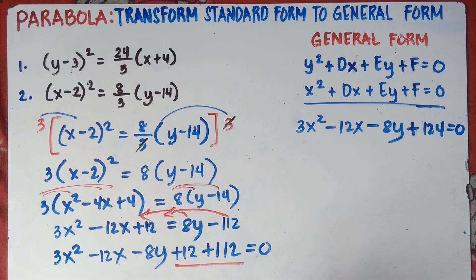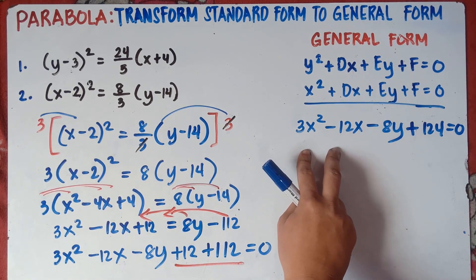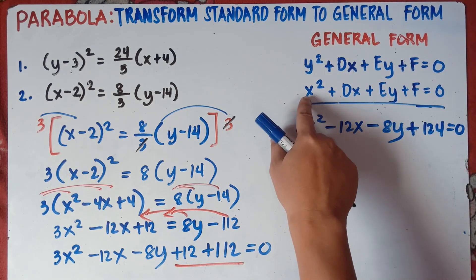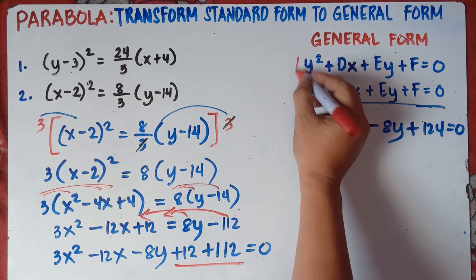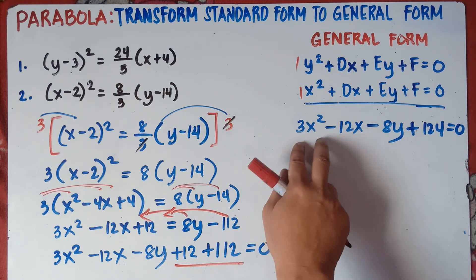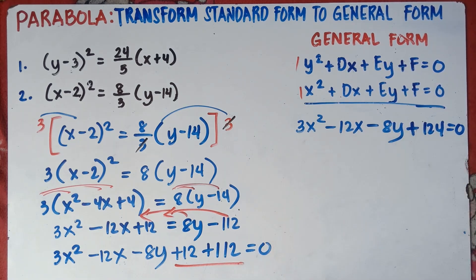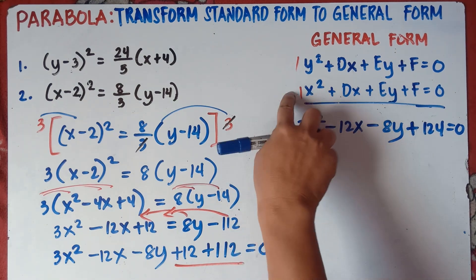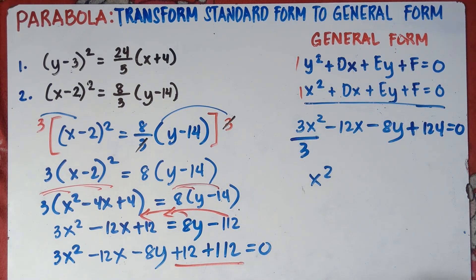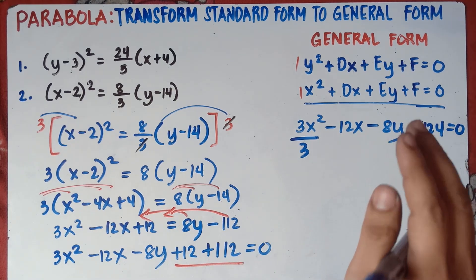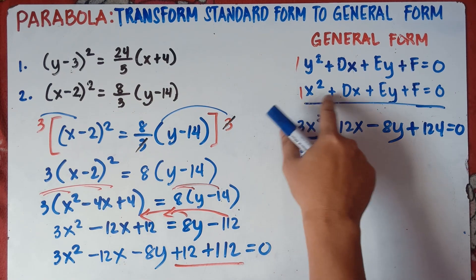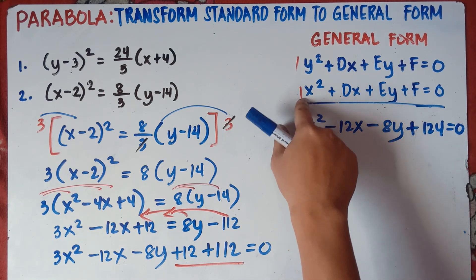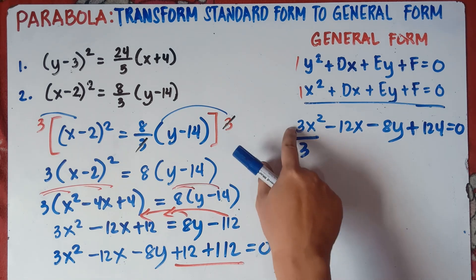Now check the general form of a parabola: x² + dx + ey + f = 0, where the coefficient of x² must be 1. Since we have 3x², we need to divide the entire equation by 3, because 3 ÷ 3 = 1 and we can get 1·x².